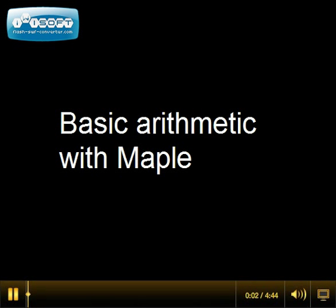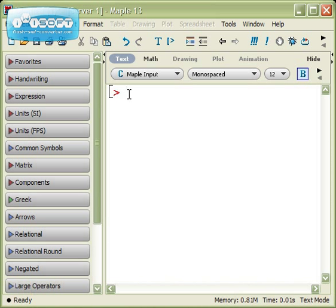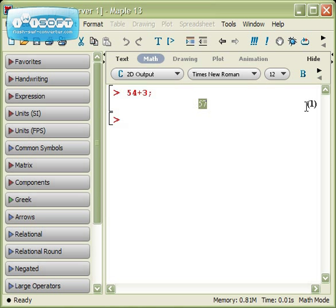Let's talk about basic arithmetic with Maple. Maple can function as a calculator. If you launch Maple and it's in worksheet mode, you'll have these little prompts here. It's really simple. If you wanted to add 54 and 3 together, you just type in 54 plus 3. The only thing you have to remember is that you would include a semicolon at the end. When you hit enter, Maple says that the answer is 57 and it gives you what's called a line number, and we'll talk about those later.